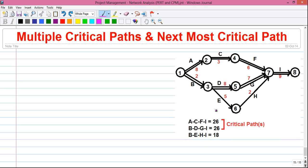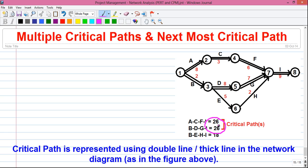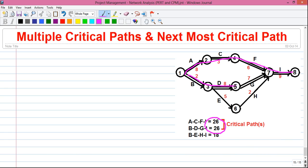So as I already mentioned, the critical path is the path which has the maximum time duration value. But in this question, we have 2 maximum time duration values and both are 26. So we have 2 critical paths in the network. One is A, C, F and I and second is B, D, G and I.